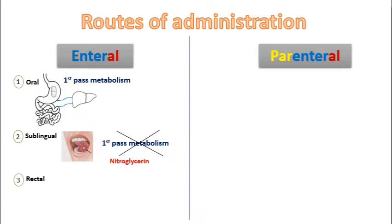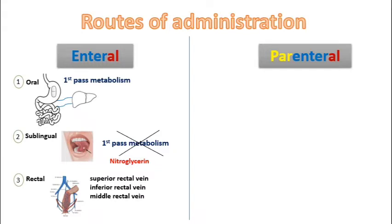The third route is the rectal one, in which drugs are taken in the form of suppositories. Three veins drain this area: the superior rectal vein, the inferior rectal vein, and the middle rectal vein. The superior rectal vein drains via the portal system to the liver, while the middle and inferior veins bypass the liver and deliver blood directly to the systemic circulation. So this route is considered two-thirds systemic, and part of it bypasses first-pass metabolism.